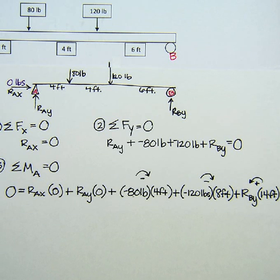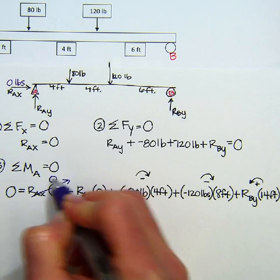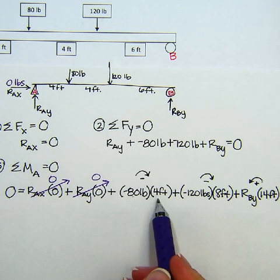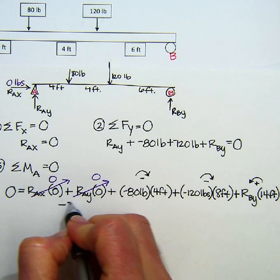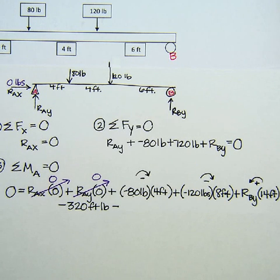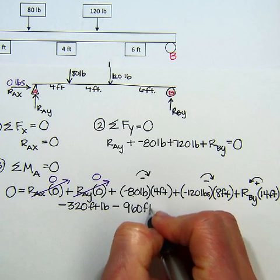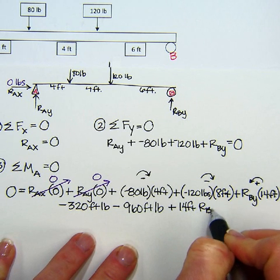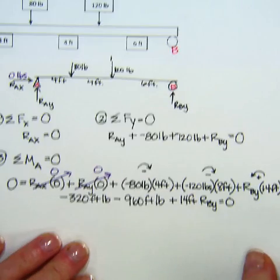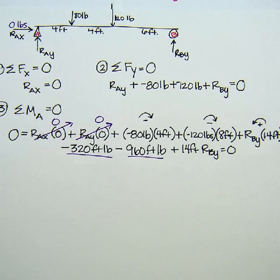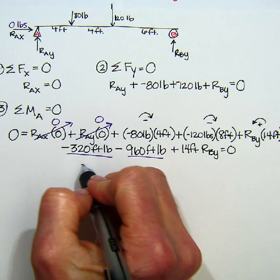So, convenient thing here. Luckily, my reaction force at Ax times 0 is 0. This is 0. Getting out my calculator here. And I'm going to multiply 80 times 4 and I get negative 320 foot-pounds. Minus 120 times 8 is 960 foot-pounds. Minus plus 14 feet RBY equals 0. So I'm going to combine like terms. Negative 320 and negative 960 is negative 1280.